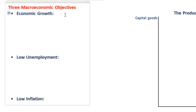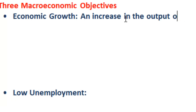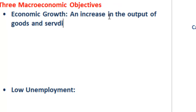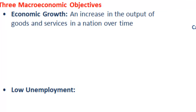Let's begin with economic growth. Economic growth has a very simple definition - it is simply an increase in the output of goods and services in a nation over time. Now how do we know if economic growth is being achieved? We must have some sort of calculation that we can do to determine whether or not growth has occurred.